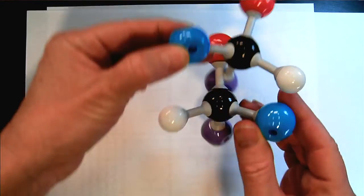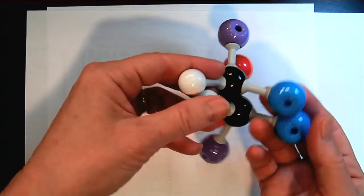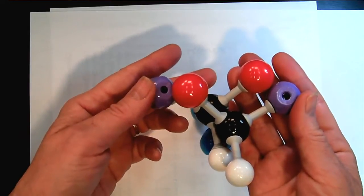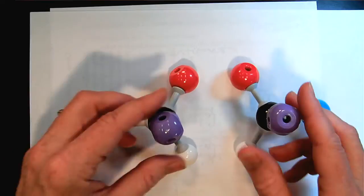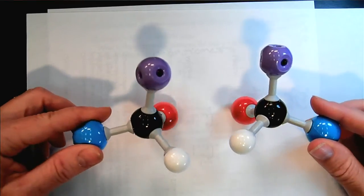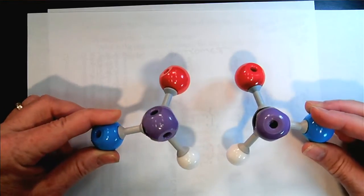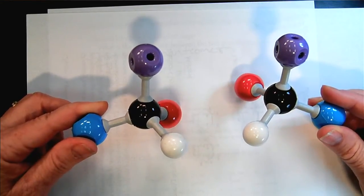Or, if I try to, if I line up the blues and whites, then notice that the reds and purples don't line up. So this is chirality. We have our tetrahedral carbon, and it's bonded to four different groups, symbolized by the four different colors. And so these are referred to as a pair of enantiomers.